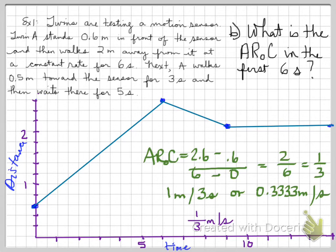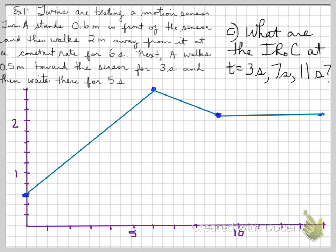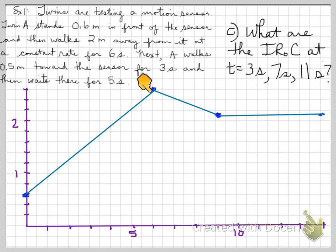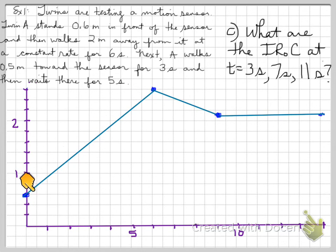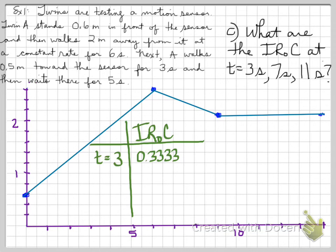For part C: what are the instantaneous rates of change at t = 3s, t = 7s, and t = 11s? Since we're on a straight line, the slope is the same throughout. The slope of a line is the rate of change, and on a line the instantaneous rate of change equals the average rate of change. So at t = 3 seconds, it's 0.333 meters per second — same as the average rate.